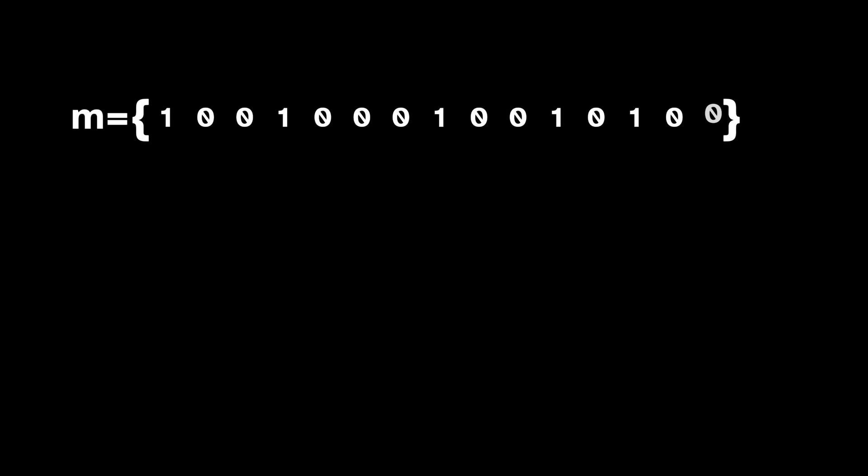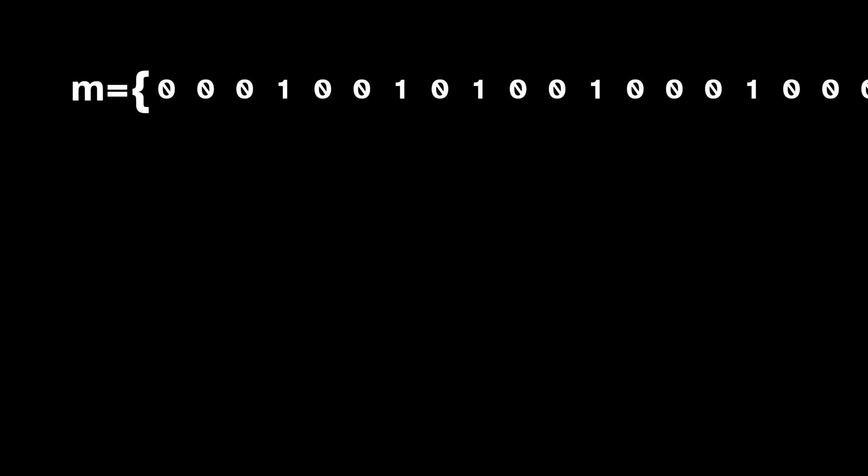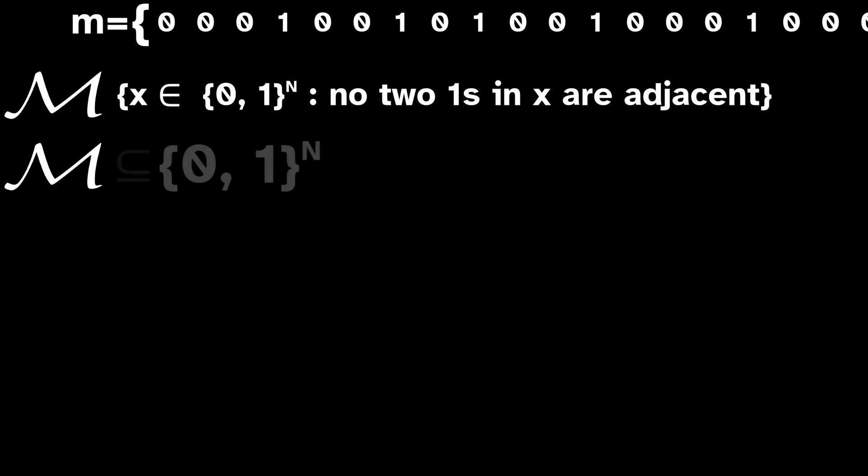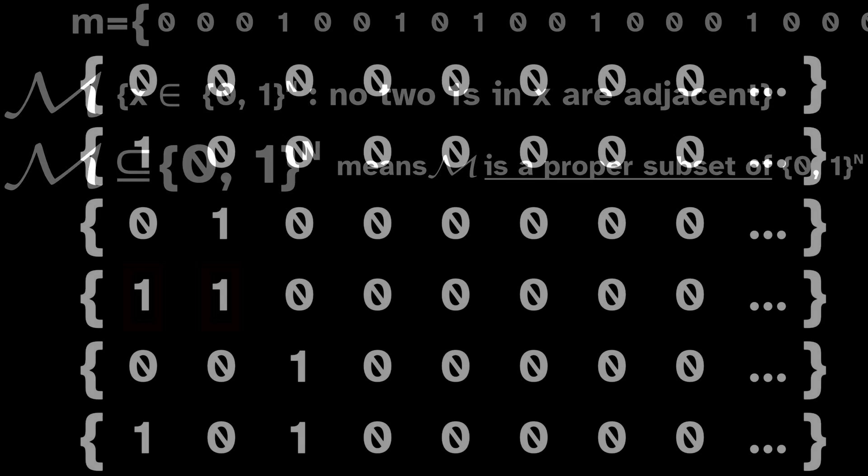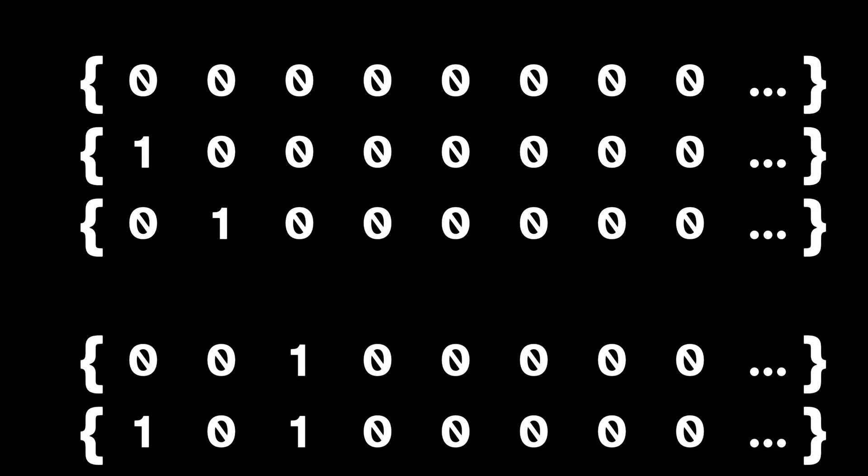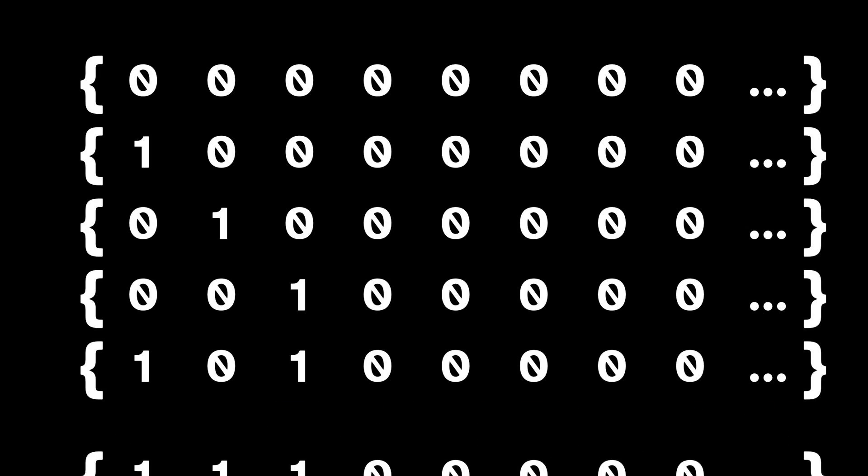This rule is shift invariant because, if I start with an arbitrary sequence that doesn't contain any adjacent ones, and then I shift it, it won't suddenly contain adjacent ones because all the symbols are in the same order after the shift. So we're going to label the collection of all binary sequences satisfying this rule as M. This is a huge collection containing uncountably many sequences, but it isn't every sequence in the full shift. That makes M a proper subshift of the full shift on two symbols.